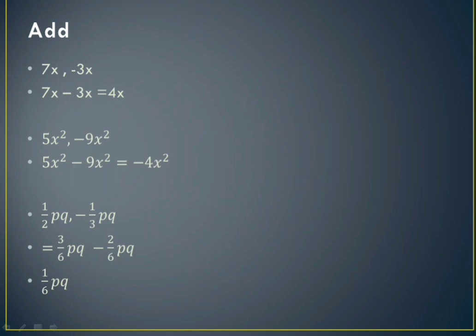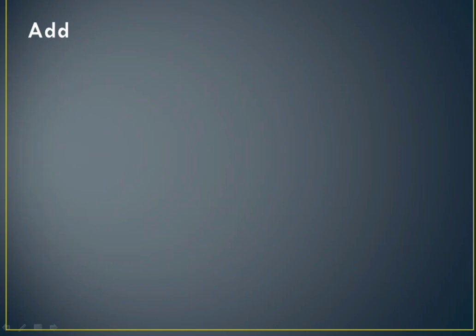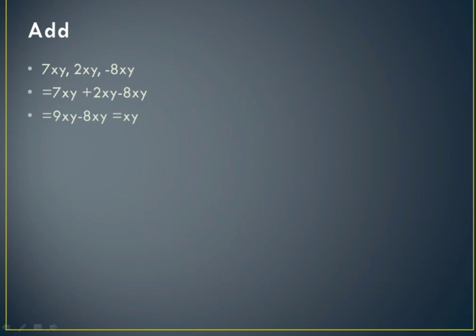That gives 1/6 p cubed as our answer. Next, add: we have to add 7xy, 2xy, and minus 8xy. Both 7xy and 2xy are positive and minus 8xy is negative. 7xy plus 2xy gives 9xy. Then 9 minus 8 is 1, so we have 1xy. Since the coefficient is 1, we ignore it and write just xy as our answer.